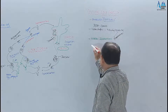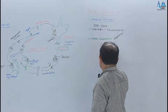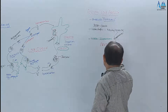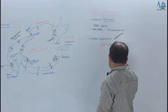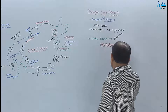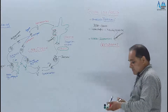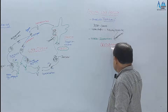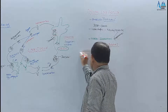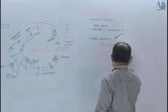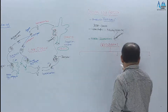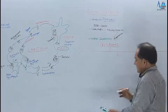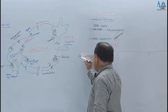Ab in animal-like protozoa ko classify karte hain. Inhe classify kiya jaata hai paanch badi classes mein. Pehla naam dete hain class Flagellata.